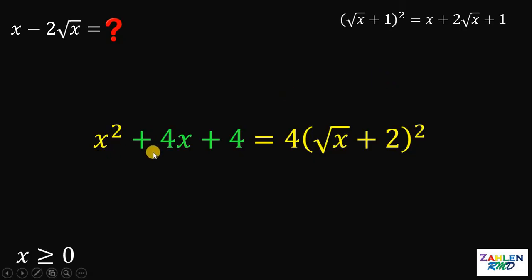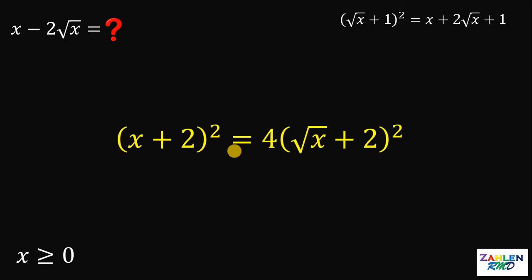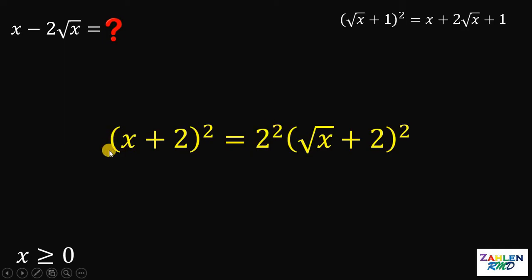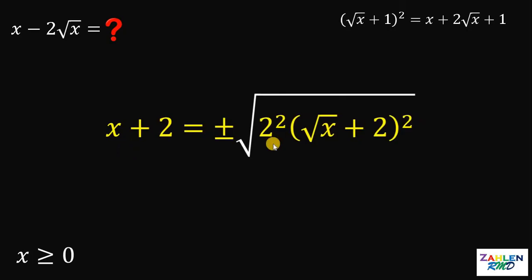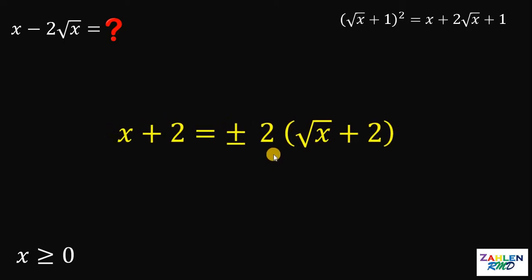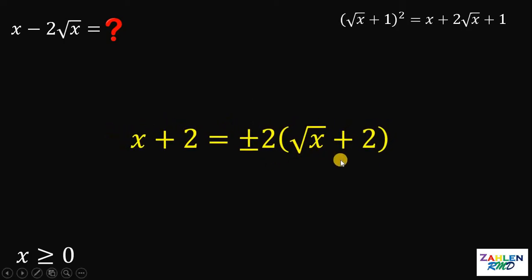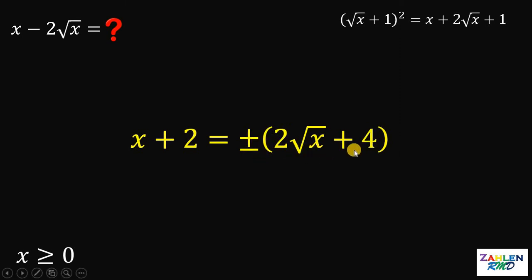Surprisingly, x squared plus 4x plus 4 is equivalent to x plus 2 quantity squared. Also take note that this 4 is just 2 squared. Now we have all terms that are squared, so what we're going to do is to take the square root on both sides. Take note that we have two possible answers here — positive or negative. On the left-hand side, this is just x plus 2. On the right-hand side, this is just positive or negative 2 times square root of x plus 2. Distributing gives us positive or negative 2 times square root of x plus 4.